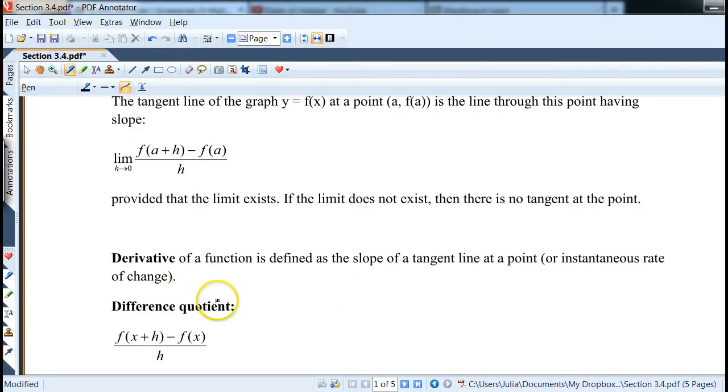Now here is the main difference quotient. Note how we use x as opposed to a. There is a slight difference here, but the whole idea is the same. It's f of x plus h minus f of x over h.